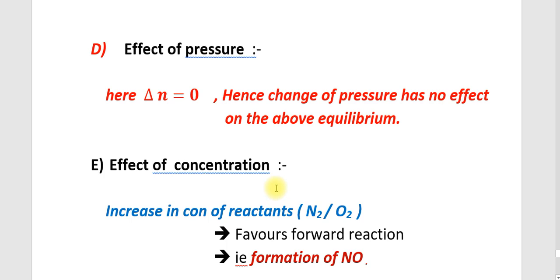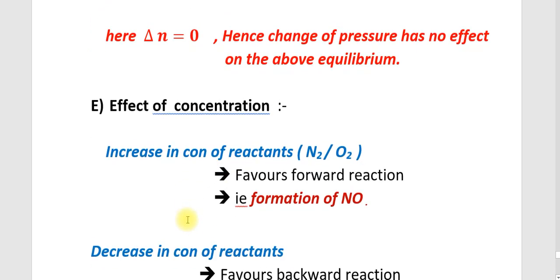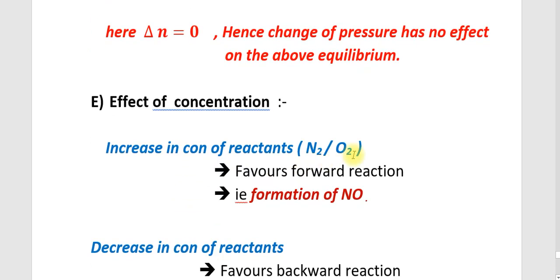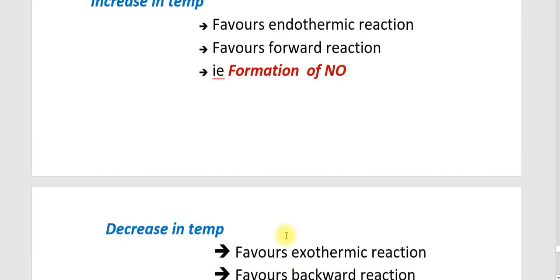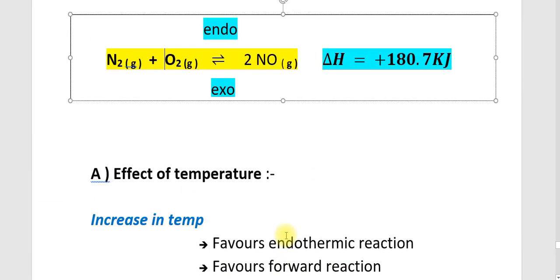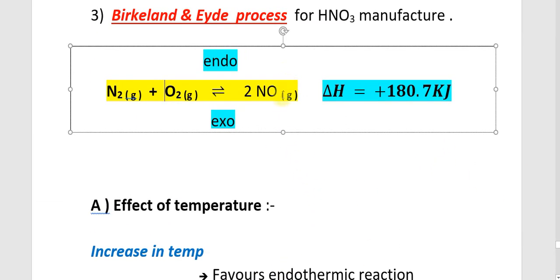Effect of concentration: an increase in concentration of reactants N2 and O2 favours the forward reaction — that is, the formation of NO. If we remove the 2NO that is formed, we are decreasing the concentration of the product; therefore, the forward reaction is favoured and more 2NO will form.